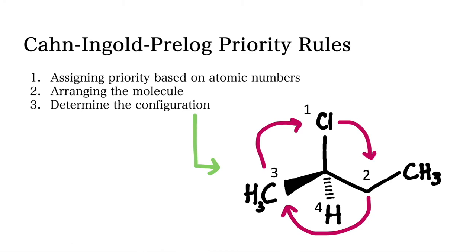So when we consider the direction from the highest to the lowest priority groups, we see that the order is clockwise, which means that the configuration is R.